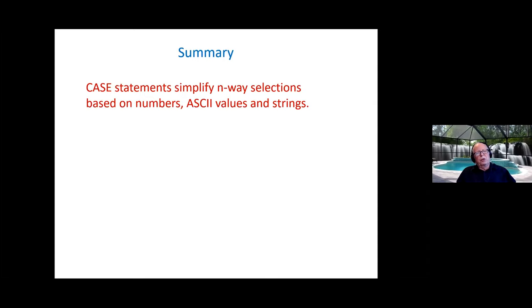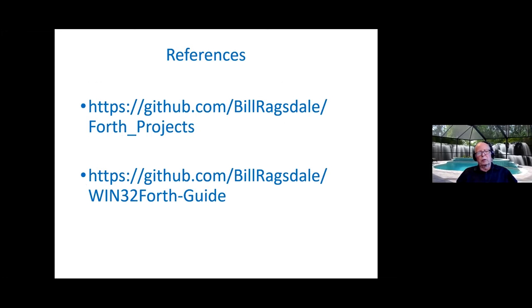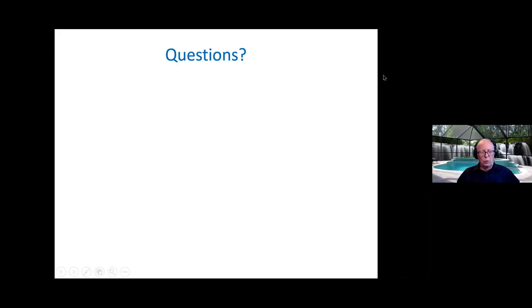So our summary, this case statement's very useful. If you have more than a two-way selection, whether you're doing numbers, ASCII values, or strings, case can work for you. The beauty of the case statement is it more clearly shows the program flow rather than this nested ifs and ends. Usually with nested ifs and ends, you need at least two lines of code for comparison, and if you indent, it can get fairly long. Remember, we added the s equal equal was the extra word necessary to make the string comparisons work. So this is posted at my GitHub page, so just go to GitHub, Bill Ragsdale, and look for Forth projects. And also, all of you users of the Win32Forth guide, at the same site, I have an 80-page user's guide to Win32Forth.